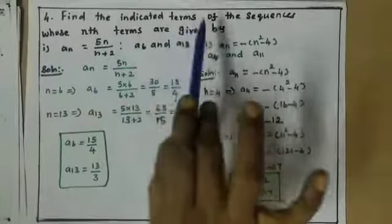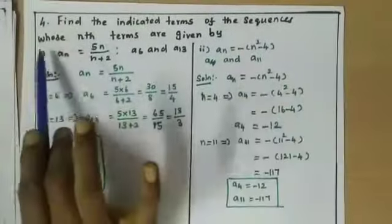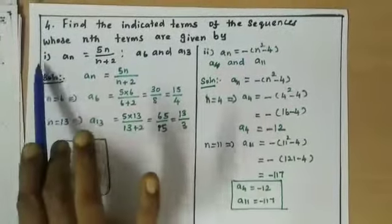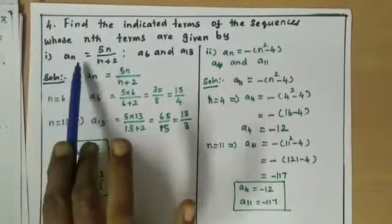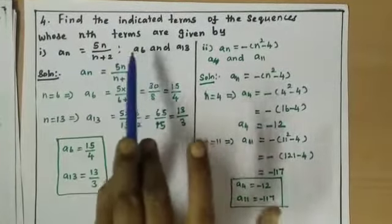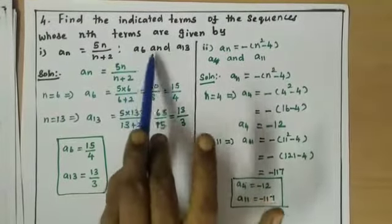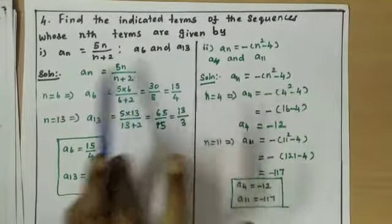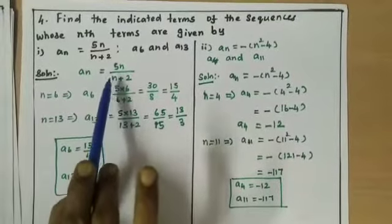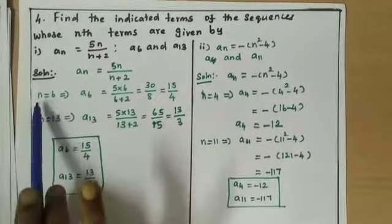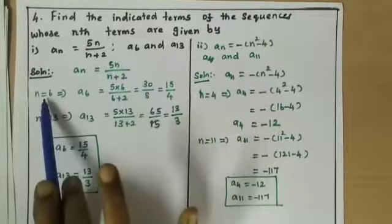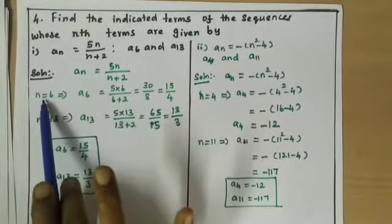Fourth one: find the indicated terms of the sequence whose nth terms are given. First one, an = 5n/(n+2). Find a6 and a13. So substituting n = 6, we get 5 into 6 divided by 6 plus 2.